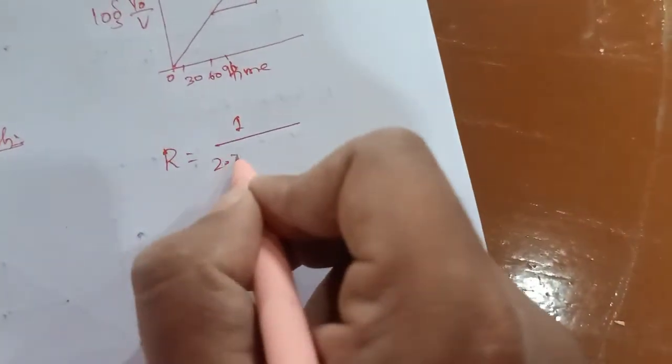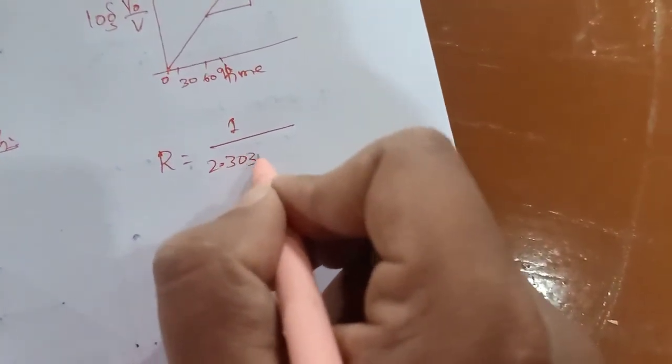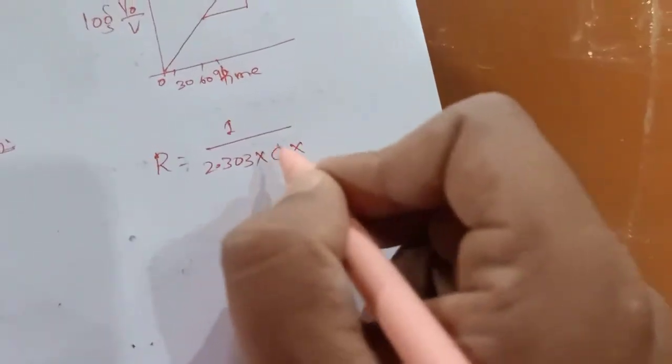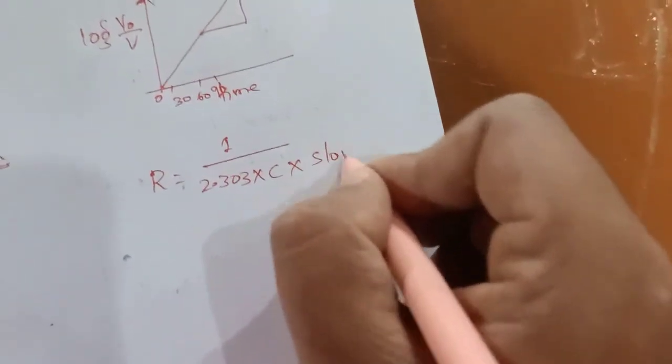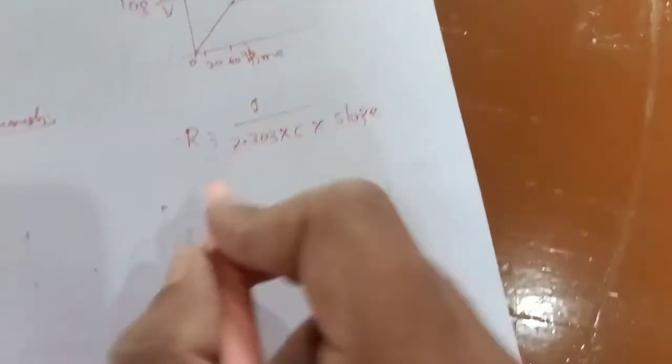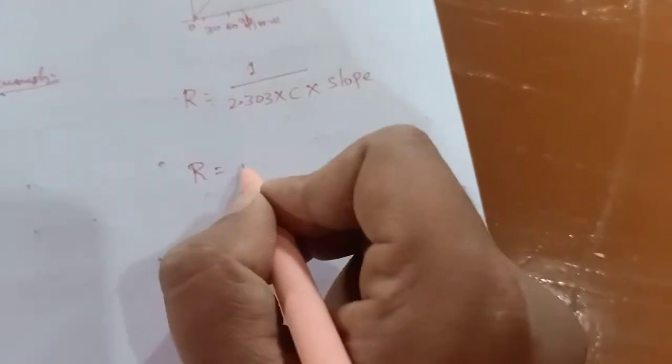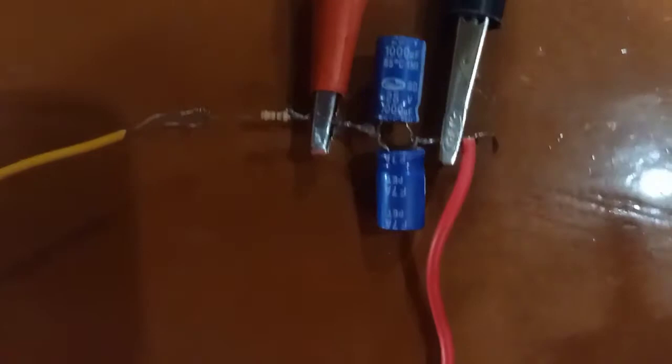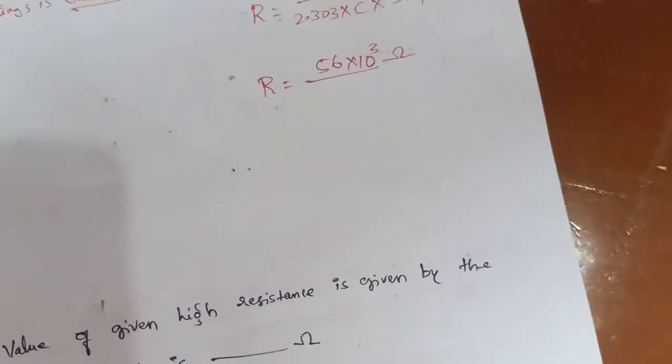R is equal to 1 divided by 2.303 × C × slope. It is approximately equal to the resistance used, that is 56 × 10³ ohms, which is 56 kilo ohms.